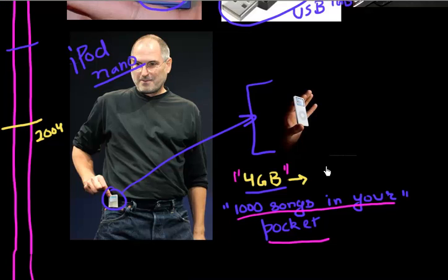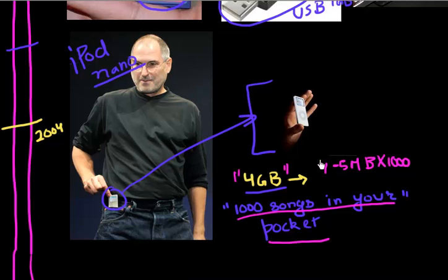One way to contextualize that four gigabyte capacity is that it's enough memory to hold a thousand songs. If you look up the size of one of your MP3 songs, it's between four to five MB, so a thousand of those is about four gigabytes.